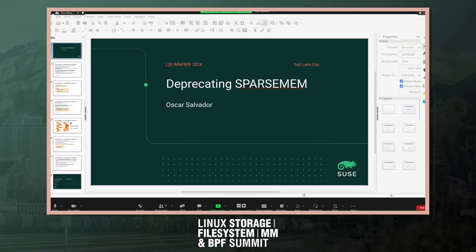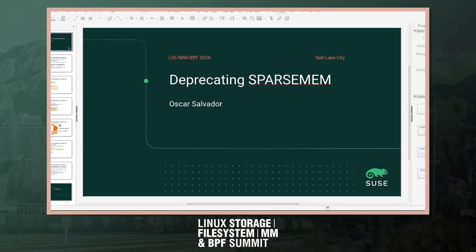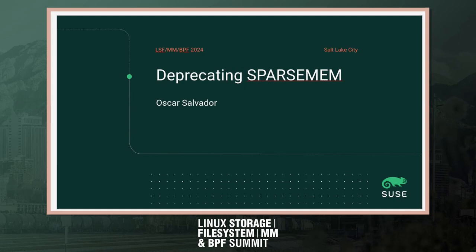These two are memory models suited for systems with sparse memory, as opposed to FlatMEM. The fundamental difference between the two is that SparseMem VMEMMAP allocates a virtual chunk that represents the memap array for the present memory in the system. This means we have a base array, so functions like page-frame-number to page, and vice versa, and folio page index, are a matter of a simple addition or subtraction of the page frame number from the VMEMMAP array, and that speeds things up.